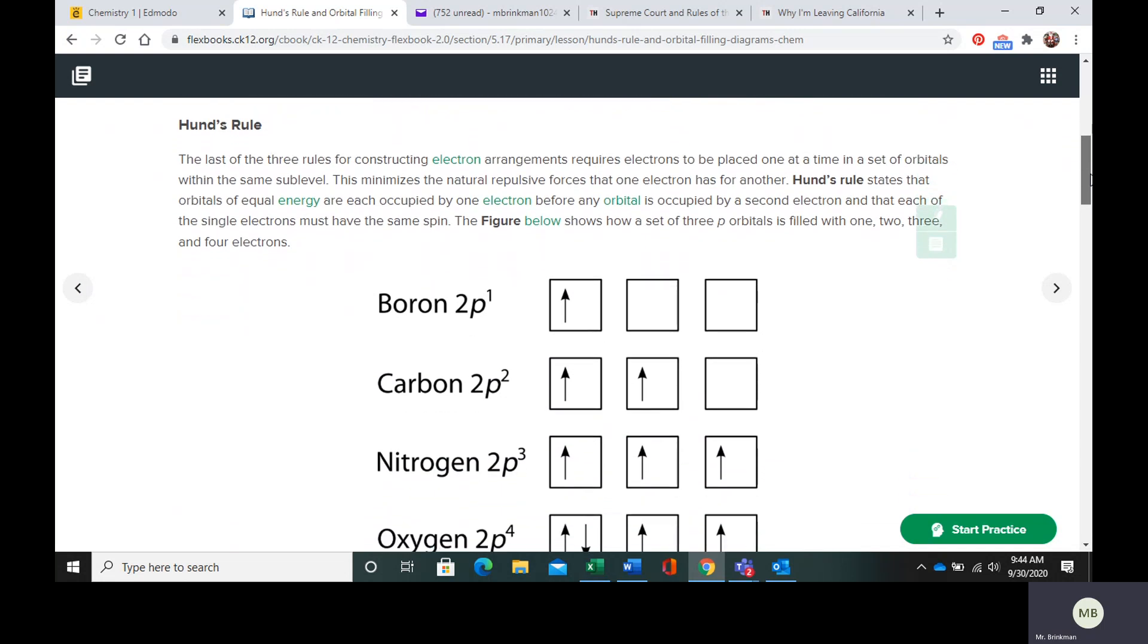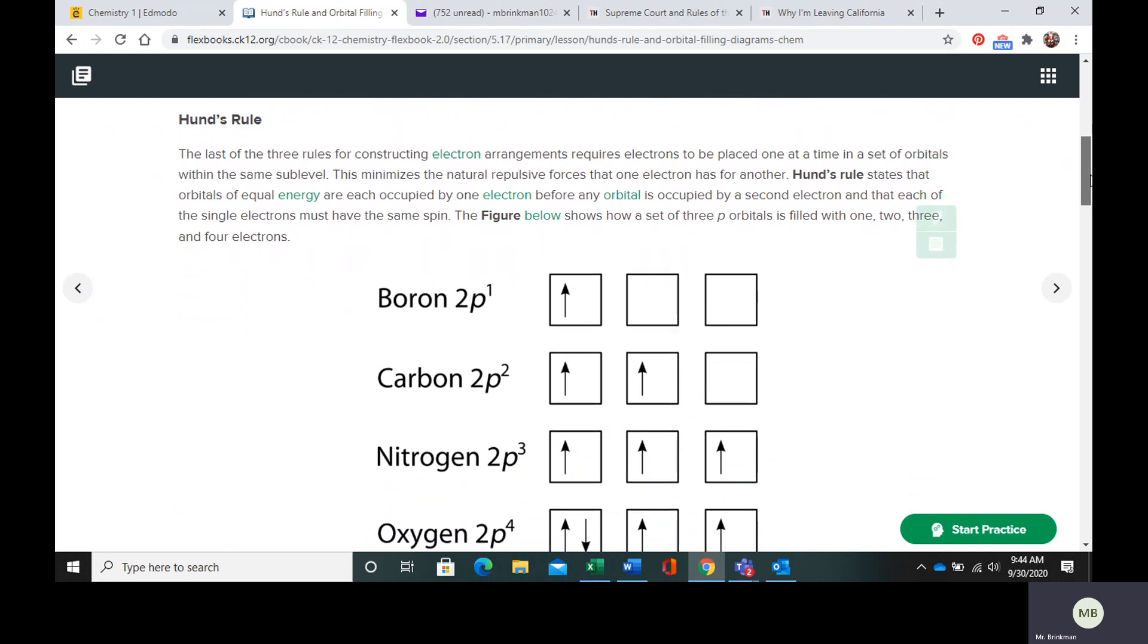What Hund's rule basically says is that orbitals of equal energy are occupied by one electron before any orbital is occupied by a second electron, and each of the single electrons must have the same spin.